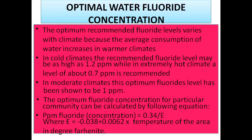Most water fluoridation studies reported around 50 to 60 percent reduction in dental caries. The optimal fluoride level is not exactly one ppm but ranges from 0.7 to 1.2 ppm — when the temperature is very high we give 0.7 ppm, and in colder regions we give 1.2 ppm. This is based on Galgan's formula: 0.34 divided by e to the power of (−0.038 + 0.0062 × temperature of the area). Temperature is therefore inversely proportional to the amount of fluoride.